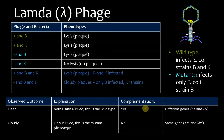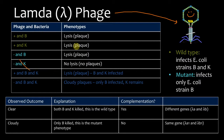So let's do an example with lambda phage. Lambda phage looks like that — look at that beautiful phage. This shows various infections. The plus or minus represents the phage, and B or K represents the type of bacteria it's plated on.